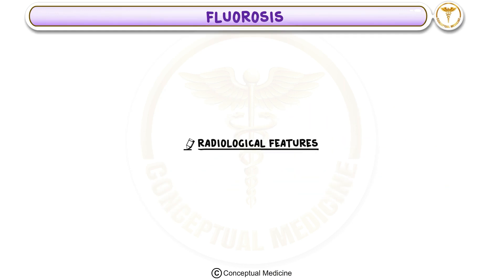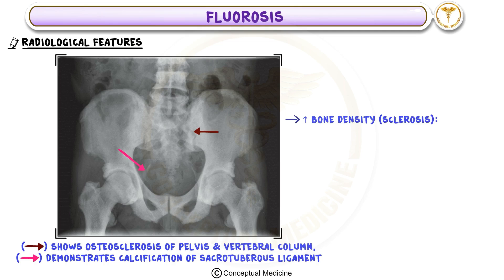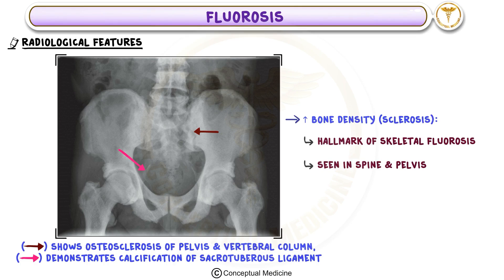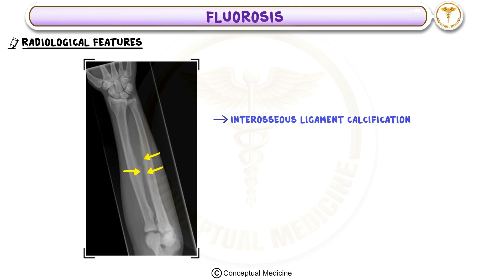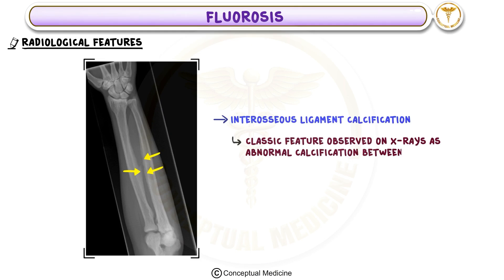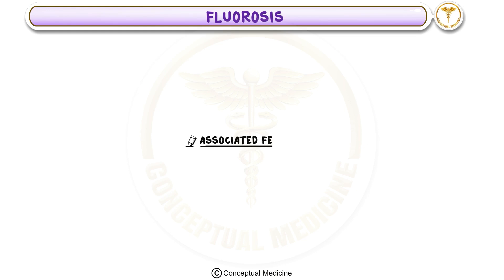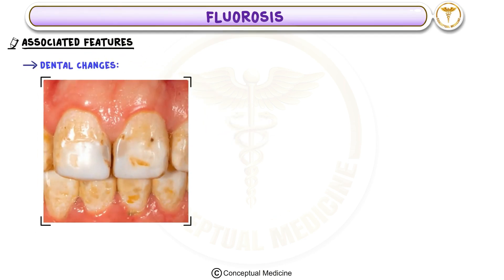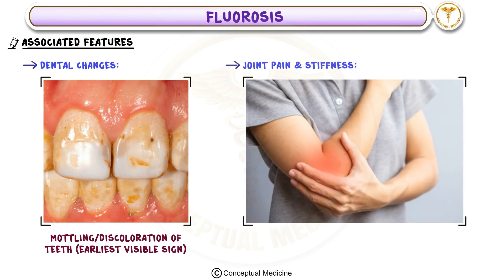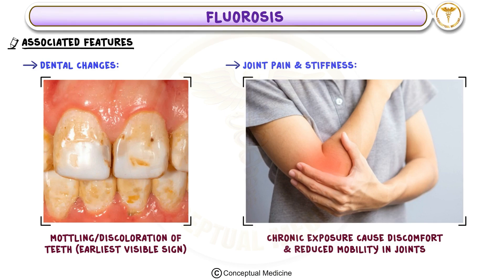Radiological findings in fluorosis are key for diagnosis. These include increased bone density and sclerosis — a hallmark of skeletal fluorosis seen in areas such as the spine and pelvis — and interosseous ligament calcification, a classic feature often observed on X-rays as abnormal calcification between bones. Associated features include dental changes such as mottling or discoloration of the teeth, which is often the earliest visible sign of excessive fluoride exposure, as well as joint pain and stiffness from chronic exposure.